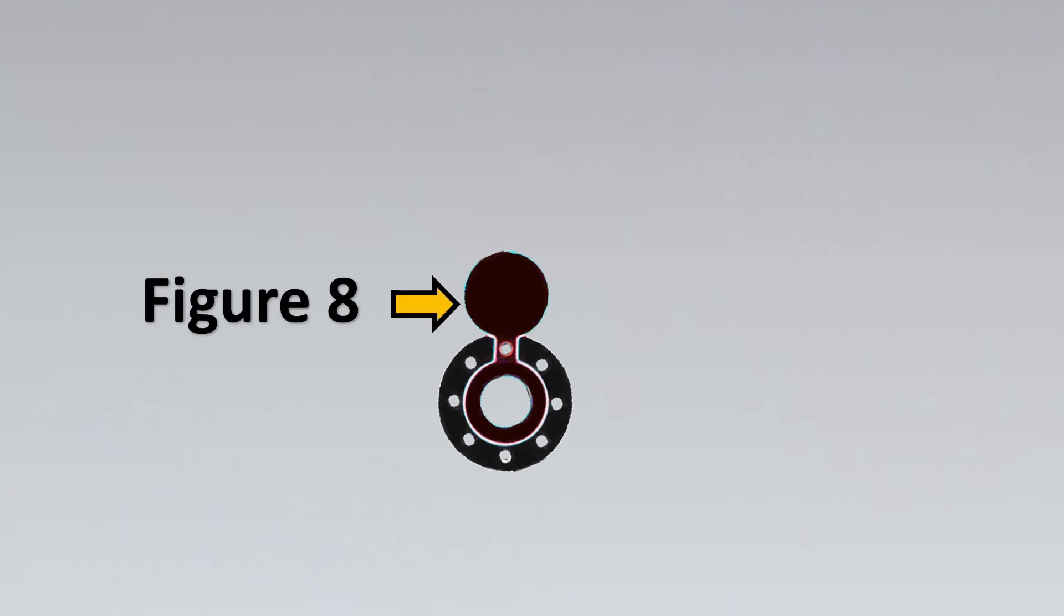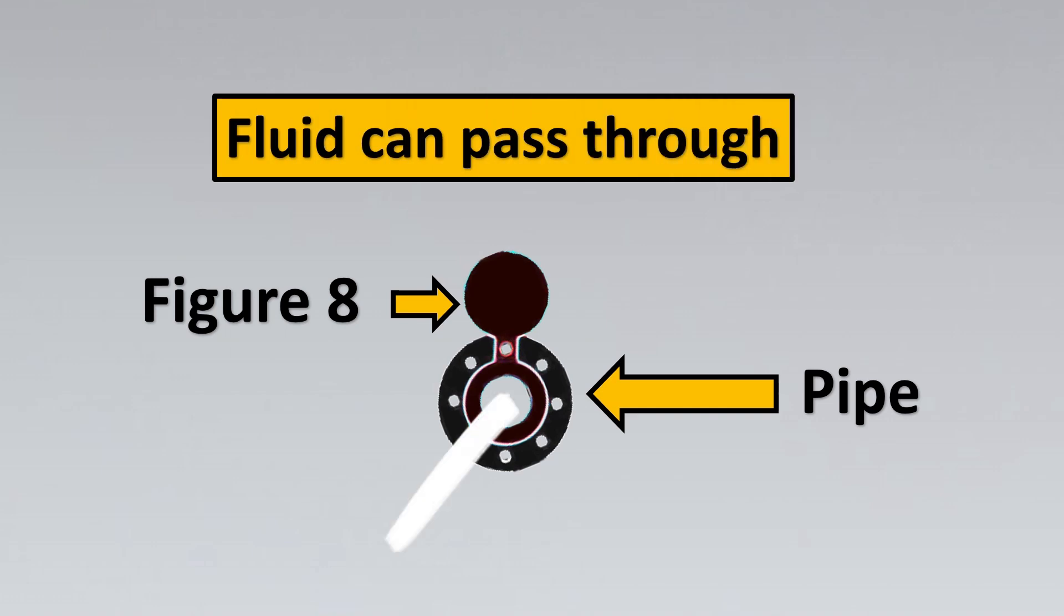The other state of it is like this. Now here the figure 8, the solid portion is put on top and the hollow portion is inside the pipe. So now the fluid can pass through it.